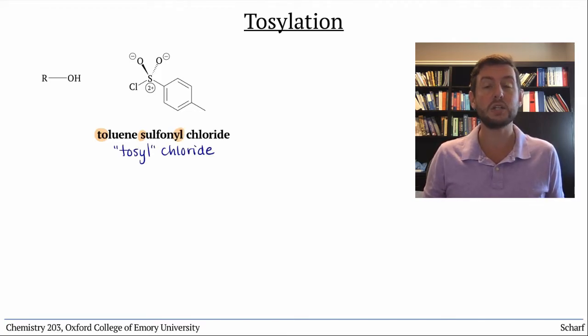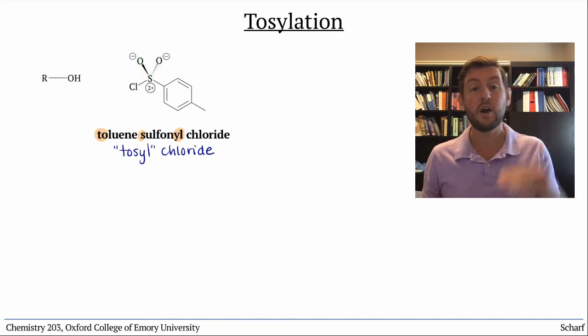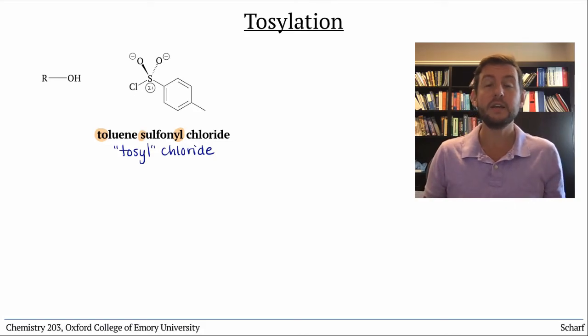You'll notice the strange looking sulfur with a 2+ charge and two negatively charged oxygen atoms. Don't be tempted to make double bonds here. It might look nicer, but sulfur doesn't have any orbitals it can use to make pi bonds with. It's sp3 hybridized, and any d orbitals it might have are much too high in energy to participate in bonding.